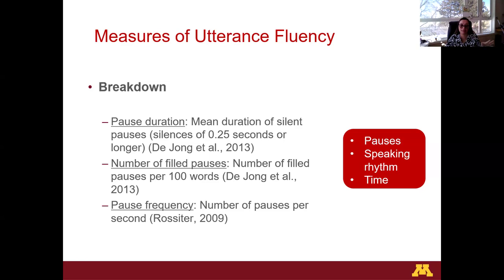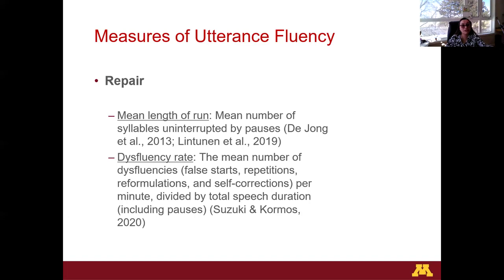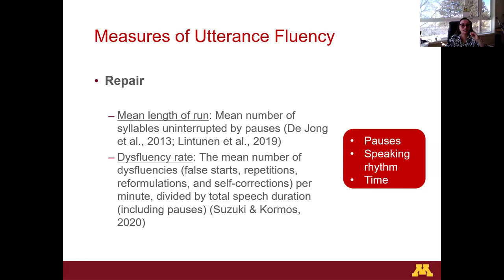Finally, we have the repair feature, which involves assessing interruptions in speech and the disfluency rate, which encompasses false starts, repetitions, reformulations, and self-corrections. Various types of repairs are measured based on their impact on process, speaking rhythm, and time. We can see a pattern with these three features — speed, breakdown, and repair — used to define how fluency is measured under the narrow perspective, going into more detail with speech production.